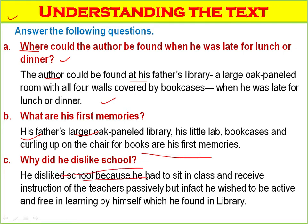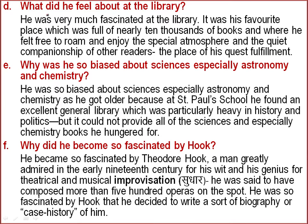Why did he dislike school? He disliked school because he had to sit in class and receive instructions from teachers passively, but he wished to be active and free in learning by himself, which he found in the library. Question D: What did he feel about the library? He was very much fascinated by the library — his favorite place, full of nearly 10,000 books, where he felt free to roam and enjoy the special atmosphere and quiet companionship of other readers. Question E: Why was he biased about science, especially astronomy and chemistry? At St. Paul's school, he found an excellent general library heavy in history and politics, but it could not provide all the science books he hungered for.